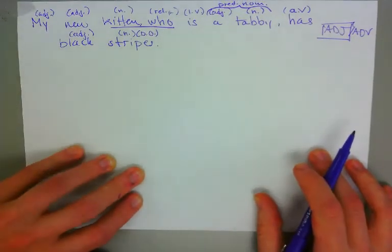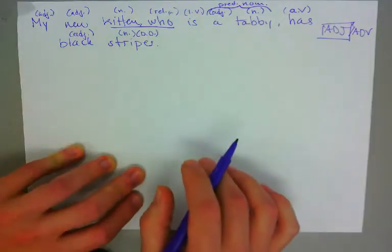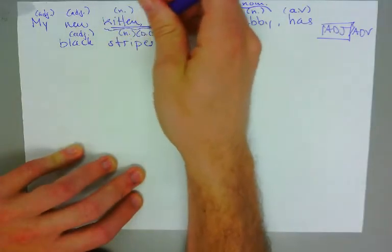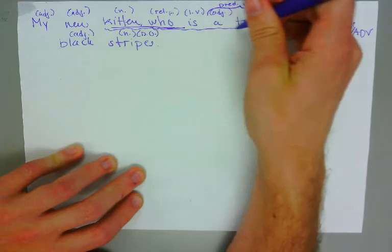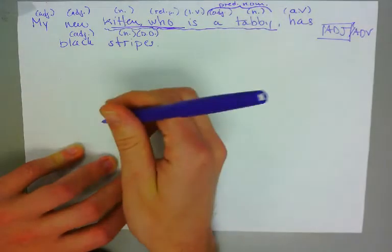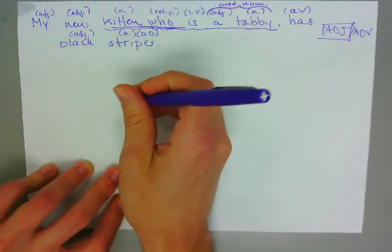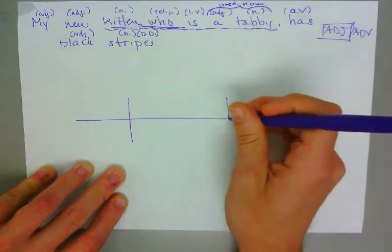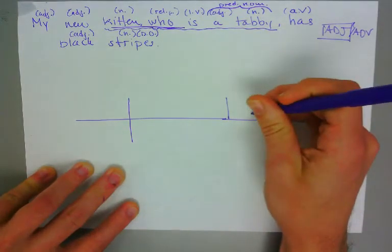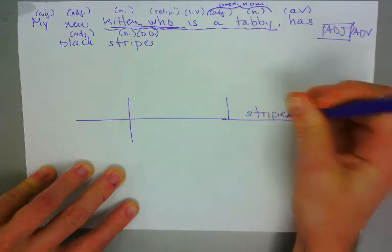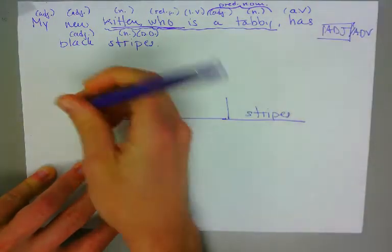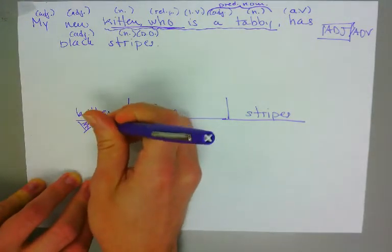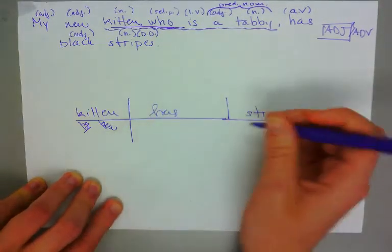So the skeleton here is going to be a little bit unique. Of course, we're going to find the main clause: 'My new kitten, who is a tabby, has black stripes.' Everything under here is considered the subordinate clause. I mentioned there was a direct object, so we know the skeleton should reflect this. This is the main clause. In reverse order: stripes, has, and kitten. We're going to fill in our modifiers — 'my new kitten has black stripes.'